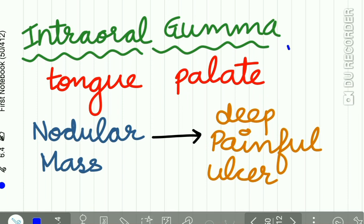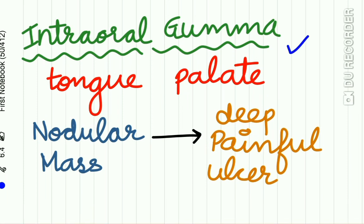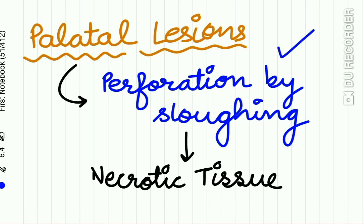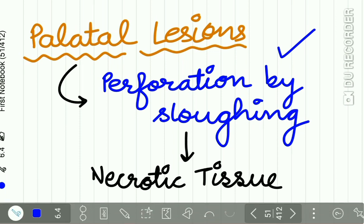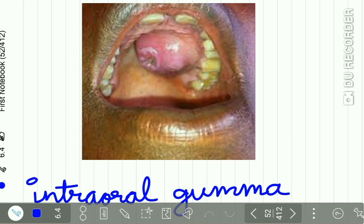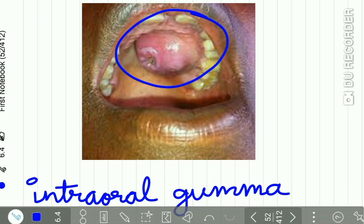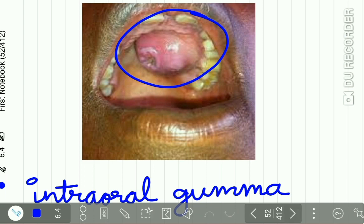Intraoral gumma may occur on the tongue and palate. A nodular mass may form which proceeds to a deep painful ulcer. Palatal lesions may cause perforation of the palate by sloughing and formation of necrotic tissue.